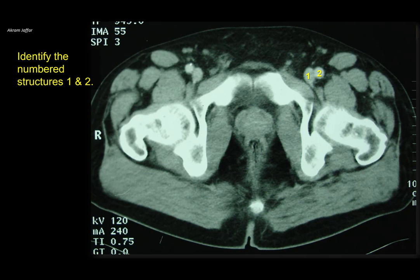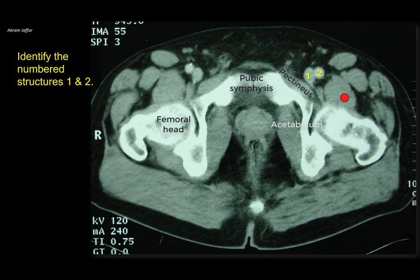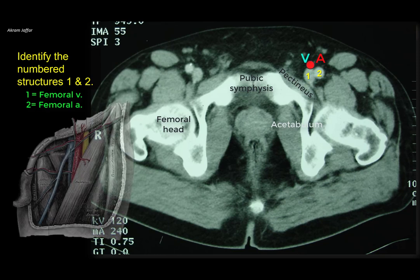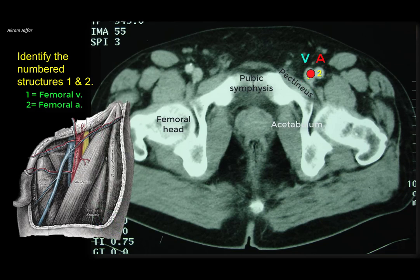Identify numbered structures one and two. This is an axial CT at the level of the hip joint. You can see the acetabulum, head of the femur, and pubic symphysis. The pectineus muscle, psoas major, and iliacus are the muscles in the floor of the femoral triangle. One structure is smaller with a rounded section and is located lateral — this is the femoral artery. Medial to it is the femoral vein, which is slightly larger and a little squeezed due to its thin wall. Medial to that is an empty space: the femoral canal, filled with fat.